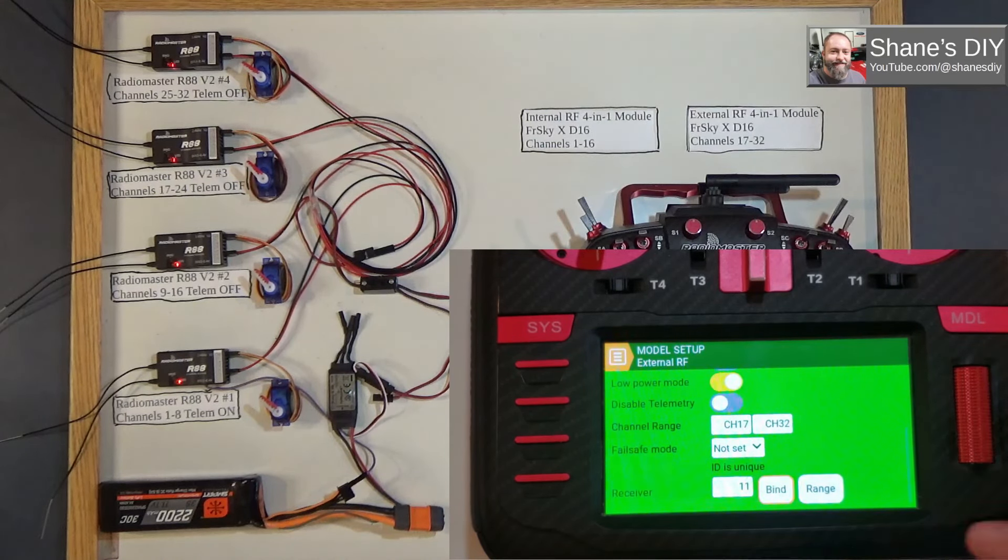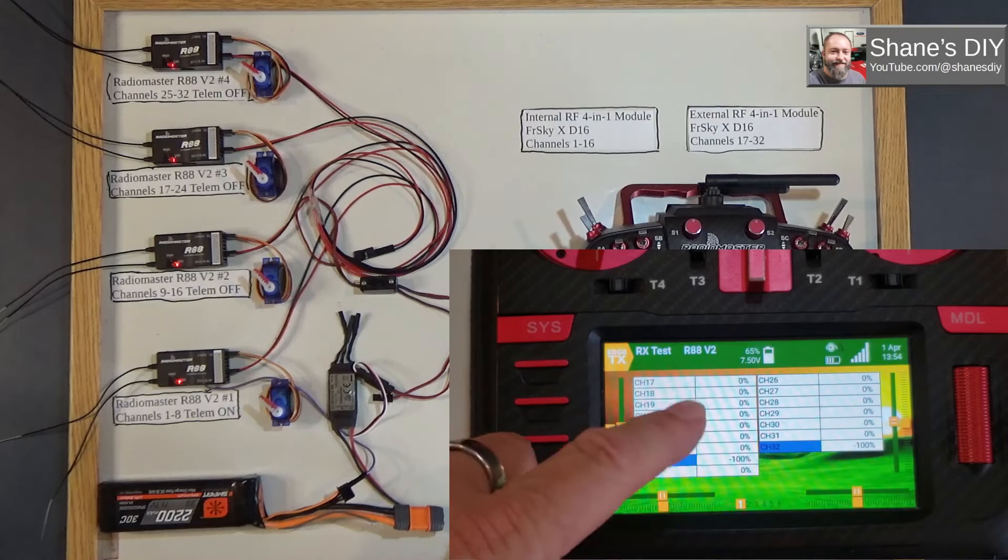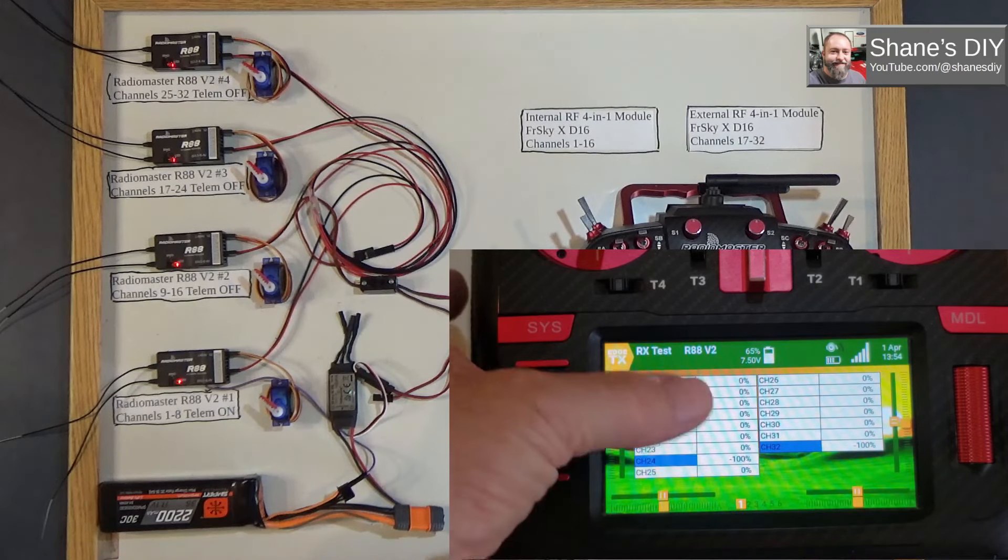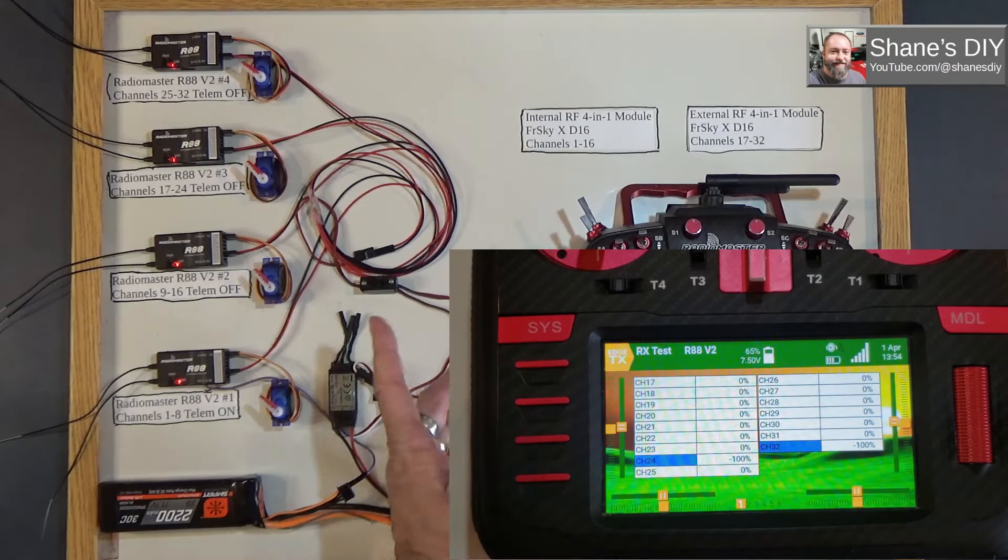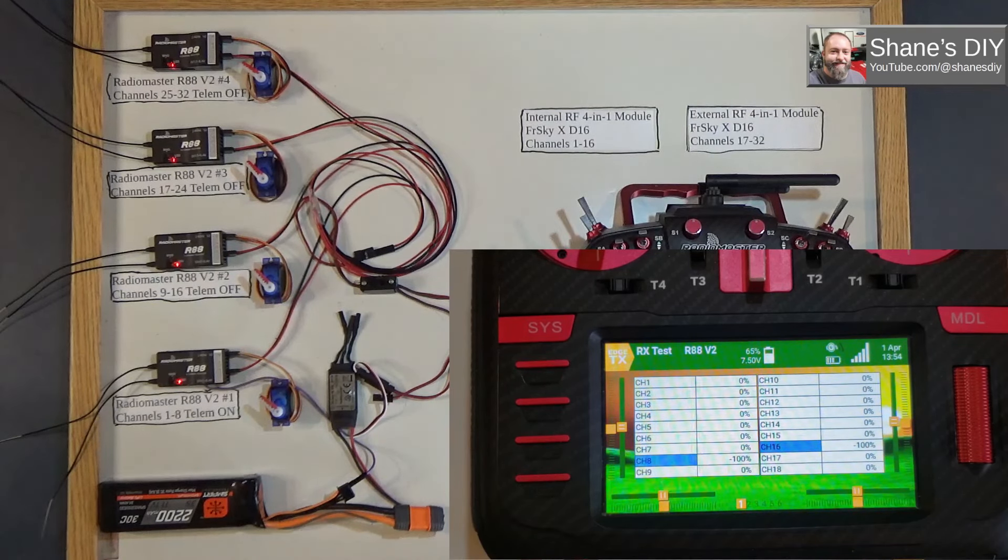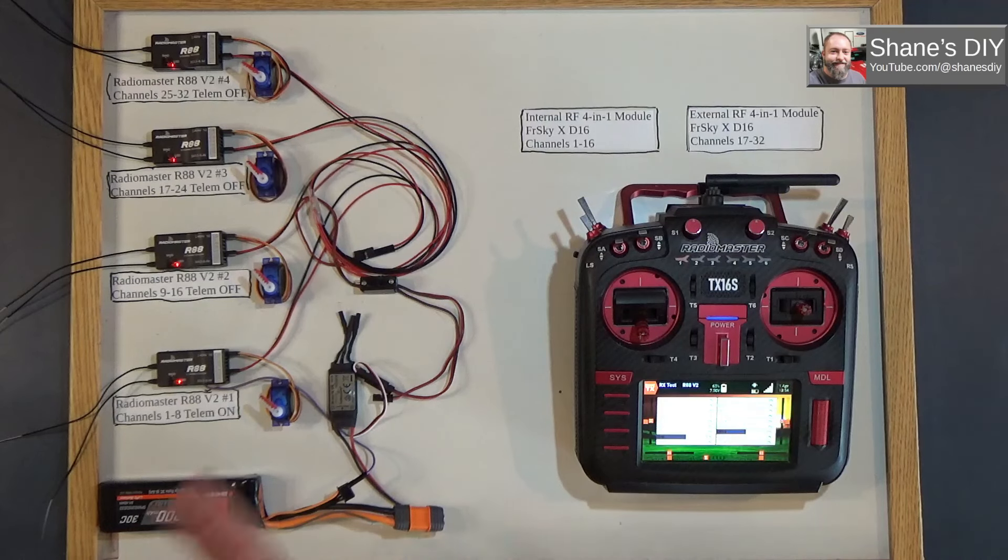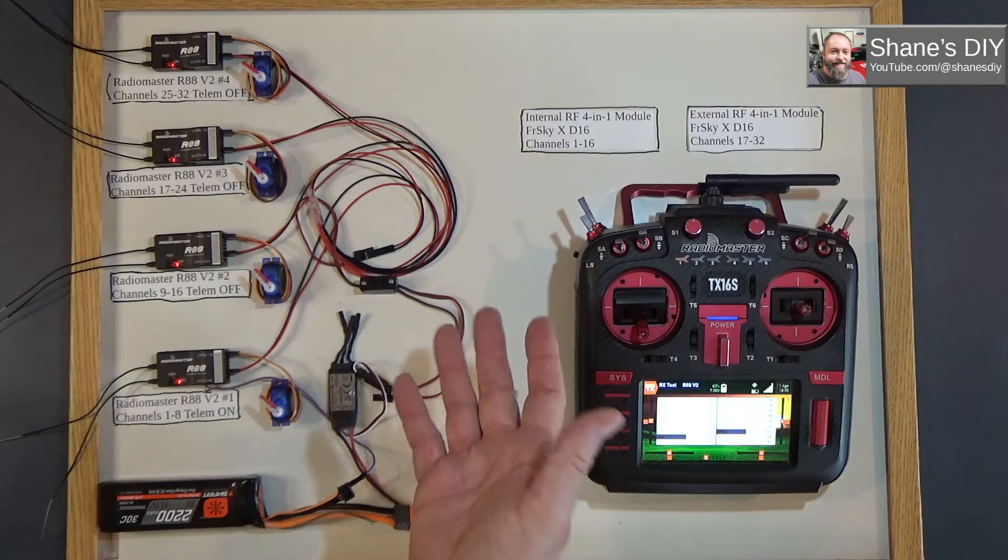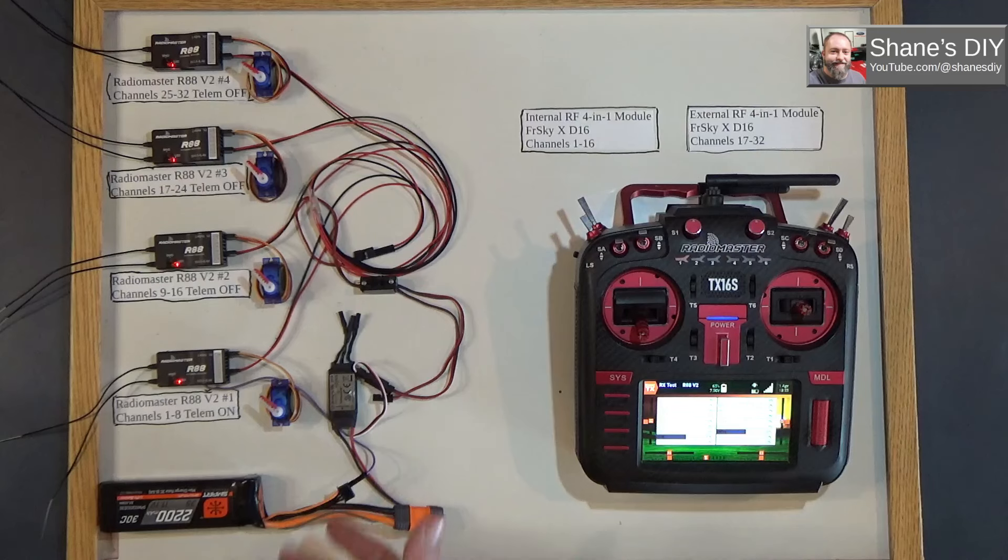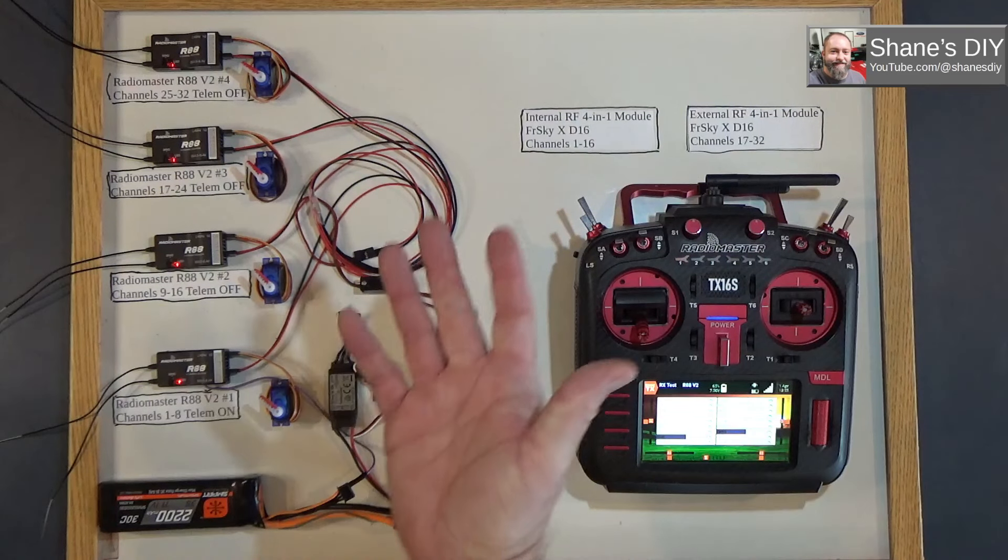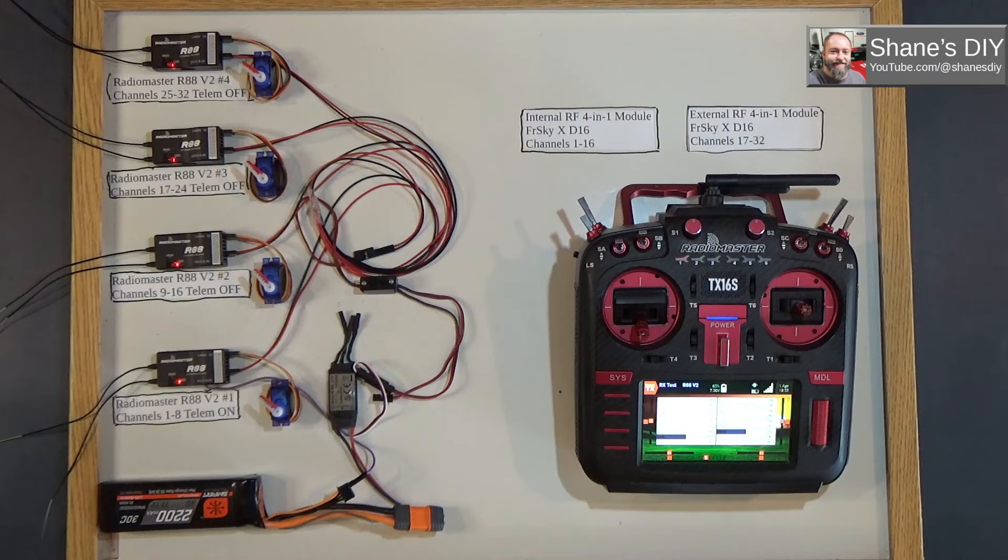Of course, you can set up any of these channels. Now you can use all of these output channels with these four receivers hooked up to it. Your use case might vary. I can think of sailing ships and stuff—RC sailing ships have a lot of channels that they require. Maybe some kind of robotics or whatever. But whatever your use case is, that's how you would do it.